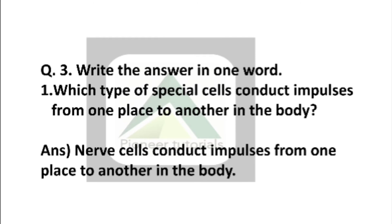Question Number 3. Write the answers in one word. Which type of special cell conduct impulses from one place to another in the body? The answer is nerve cells conduct impulses from one place to another in the body. Next.